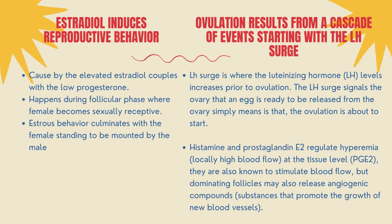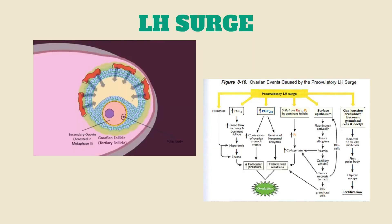Because it initiates a sequence of metabolic processes that result in ovulation, the pre-ovulatory surge of LH is crucial. The complex process of ovulation necessitates the deliberate breakdown of molecular tissue. Histamine and prostaglandin E2 are hypothesized to regulate hyperemia, or locally high blood flow, at the tissue level. After receiving an injection of the LH-like hormone human chorionic gonadotropin (HCG), blood flow to the ovary has been found to rise sevenfold. The dominating follicles have increased local blood flow, and the theca interna becomes edematous in conjunction with local hyperemia as a result of enhanced vascular permeability brought on by histamine.